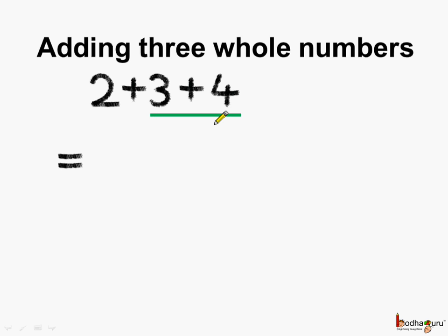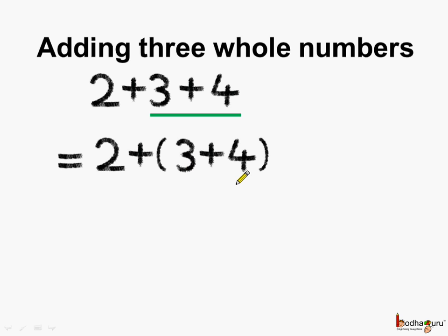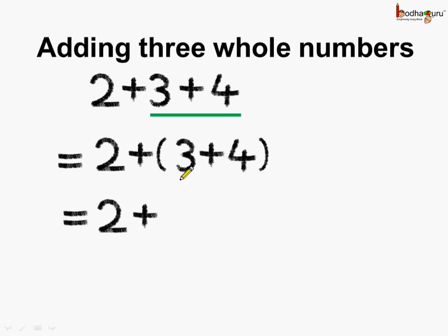We will group three plus four and add it first. So we write it as two plus, in brackets, three plus four, which indicates we need to add three plus four first. So two plus seven — adding three plus four gives seven. Two plus seven is equal to nine. Here again the answer is nine.